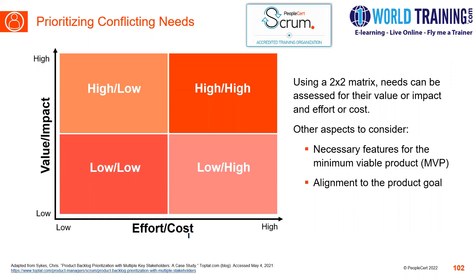Our focus should be on the high value and high impact items which have maximum impact. We should look for aspects where value and impact are high and cost is low. Your first focus should be on what has the highest impact, because if the impact is high and even effort and cost are high, that is the most critical and important conflict which has to be resolved. This should be the first priority.